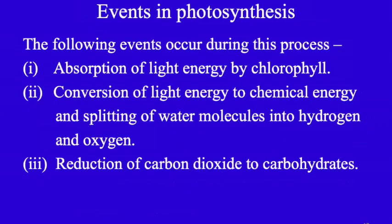The events in photosynthesis: The following events occur during the photosynthesis process. First, the absorption of light energy by chlorophyll. Second, conversion of light energy to chemical energy and splitting of water molecules into hydrogen and oxygen. Third, reduction of carbon dioxide to carbohydrates.